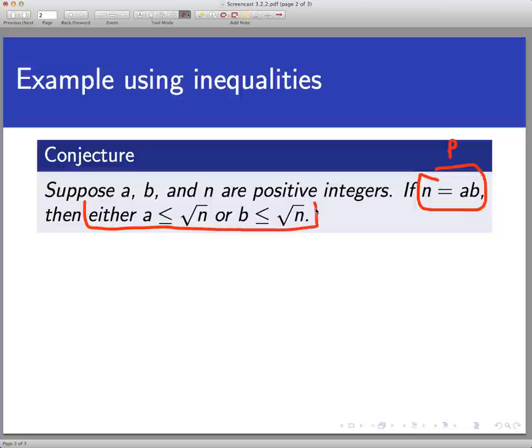And here's the conclusion. And notice the conclusion is a disjunction. It's an either or. So there's the q. So the contrapositive would say if not q, then not p.